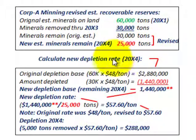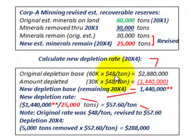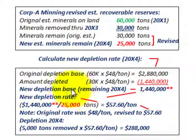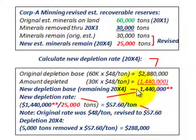We now need to calculate a new depletion rate for 20x4. This is the key to the problem: take the original depletion base — 60,000 tons times $48 per ton — which gives $2,880,000. Then subtract the amount already depleted: 30,000 tons mined at $48 per ton equals $1,440,000. Subtracting $1,440,000 from the original depletion base of $2,880,000 gives a new remaining depletion base for 20x4 of $1,440,000.